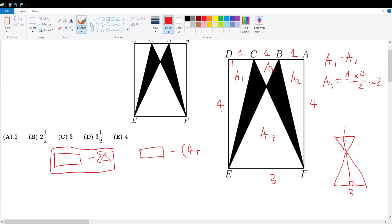Why is that? Well, let's call this altitude H1, let's call this H2. H1 plus H2 obviously is equal to 4.